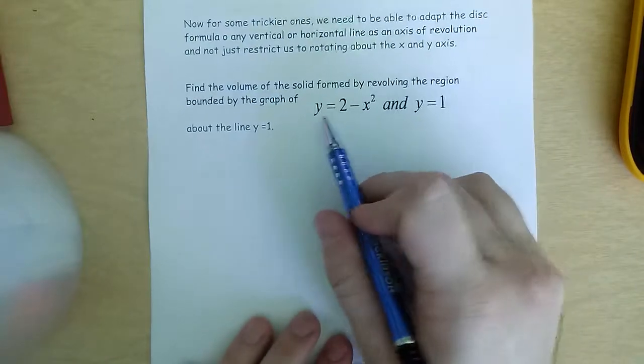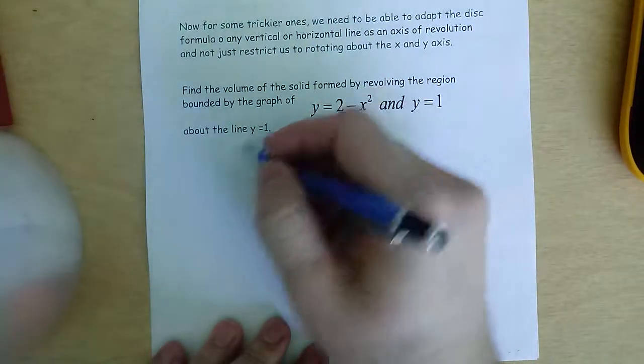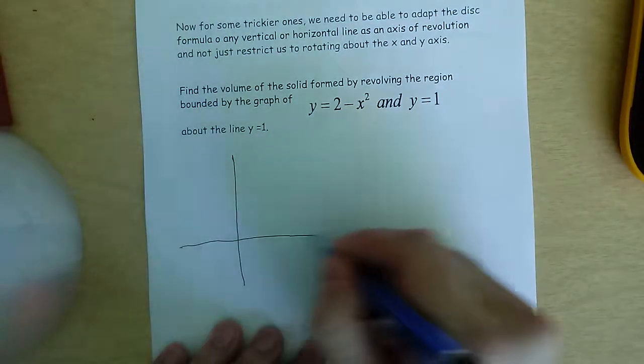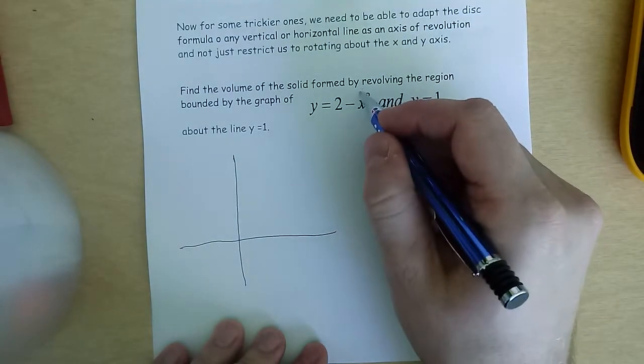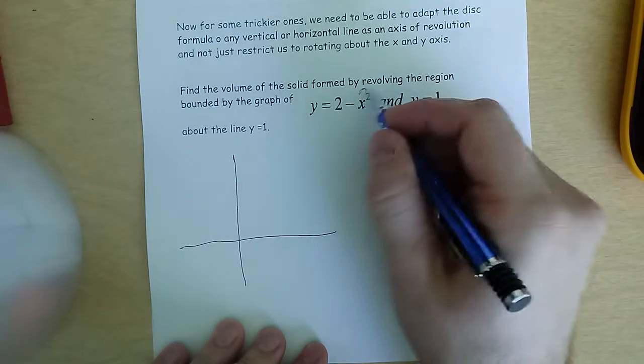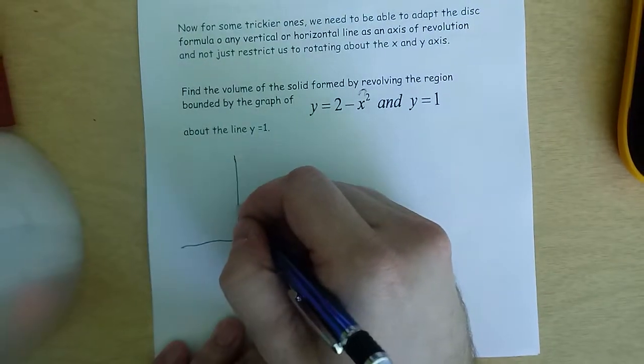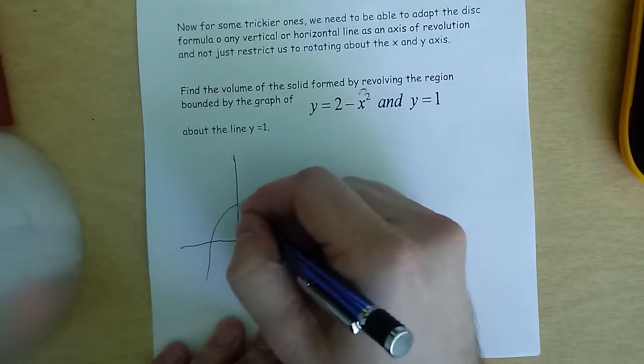So if we check this out, y equals 2 minus x squared. That's going to look like, you can see it's x squared, which is a parabola. The negative turns it upside down, and then the 2 moves it up 2. So we know that it's going to be something like this.